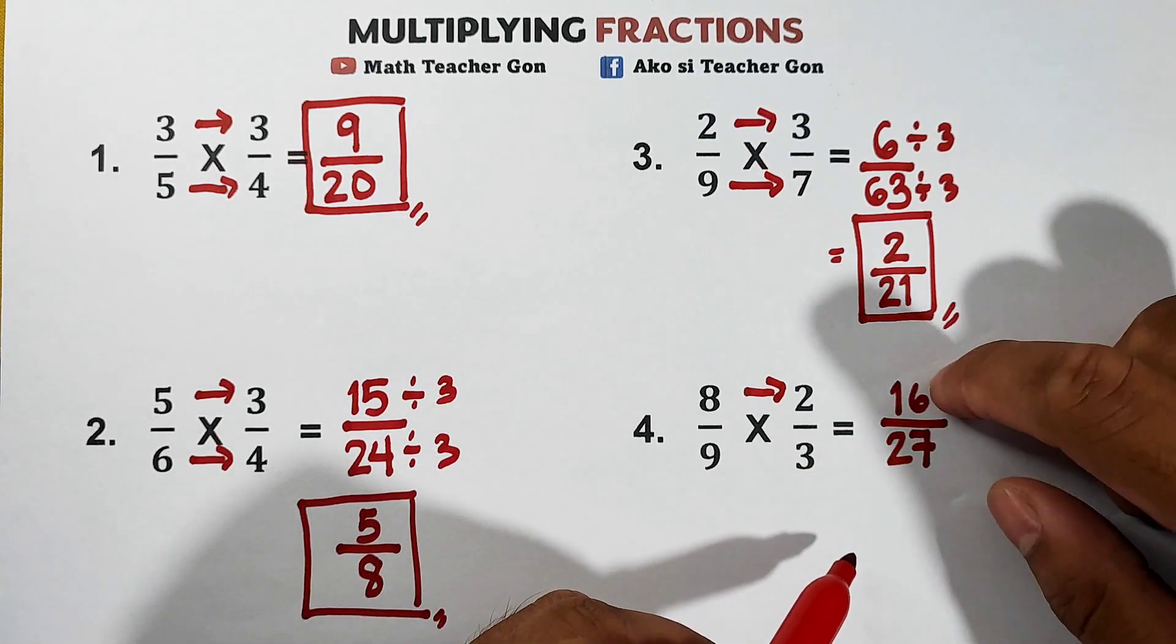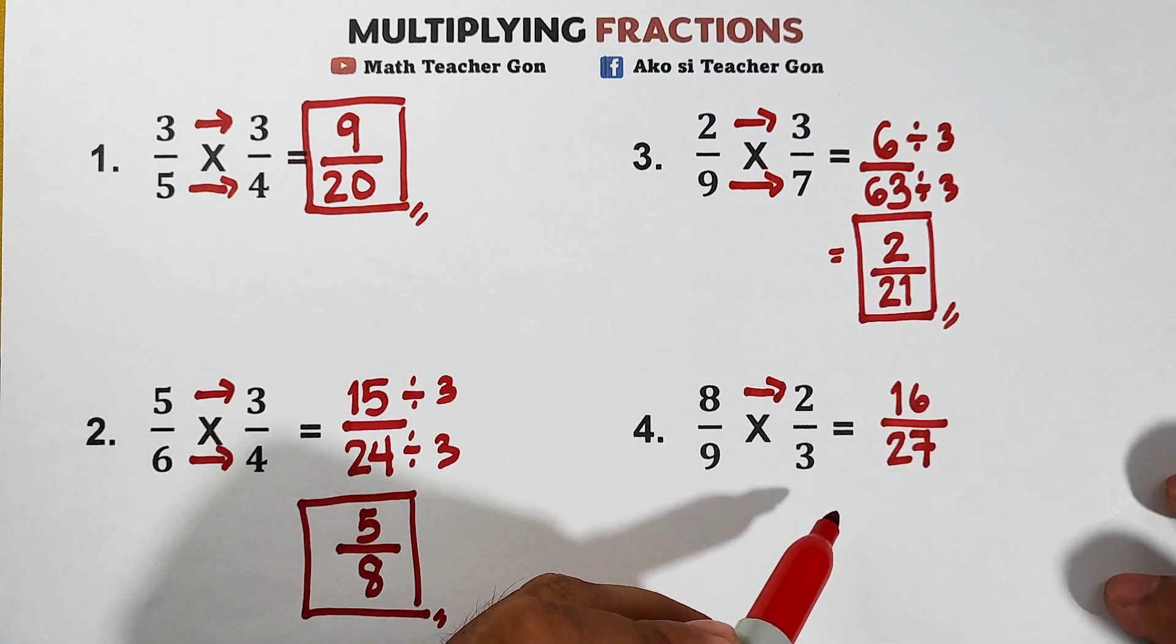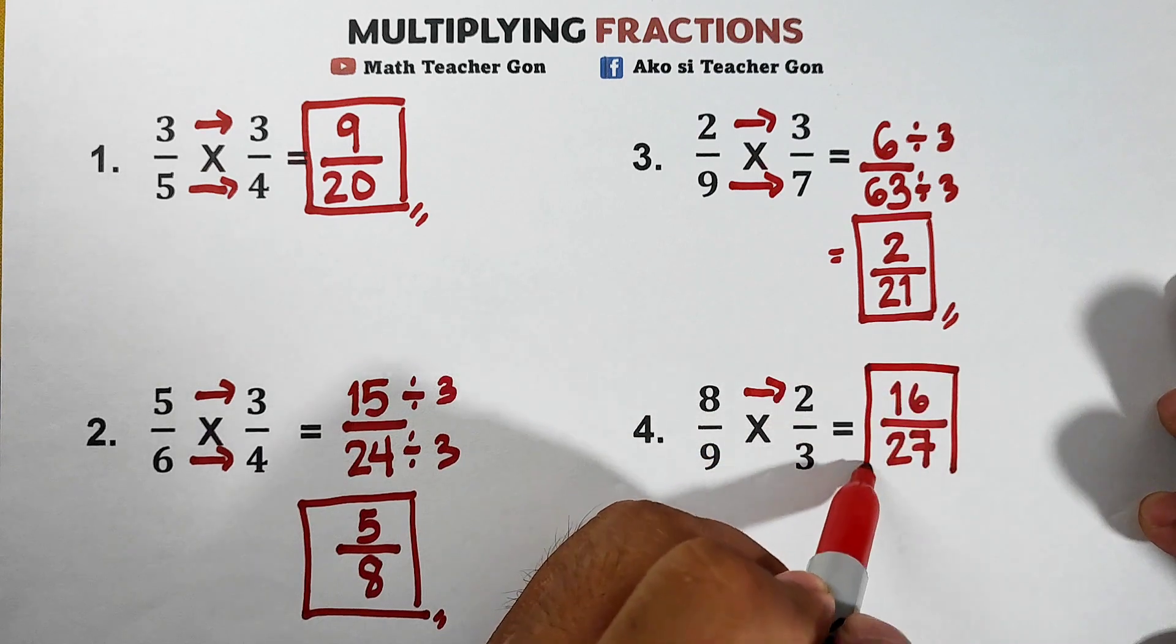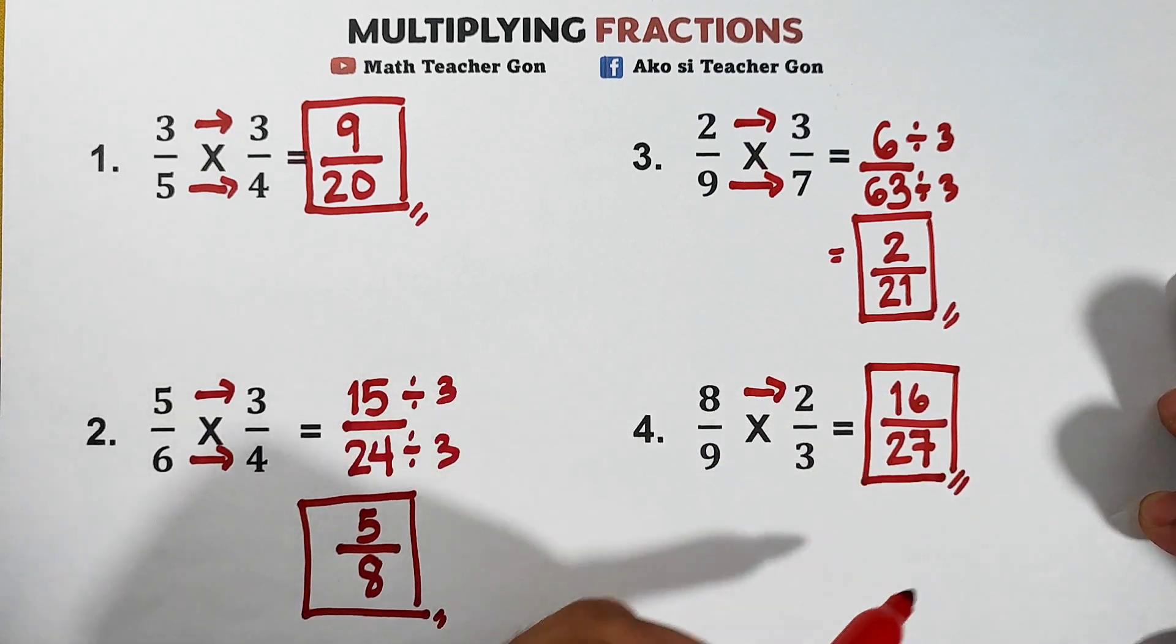This fraction, the numerator and denominator, doesn't have their greatest common factor, meaning we can say that this is the final answer.